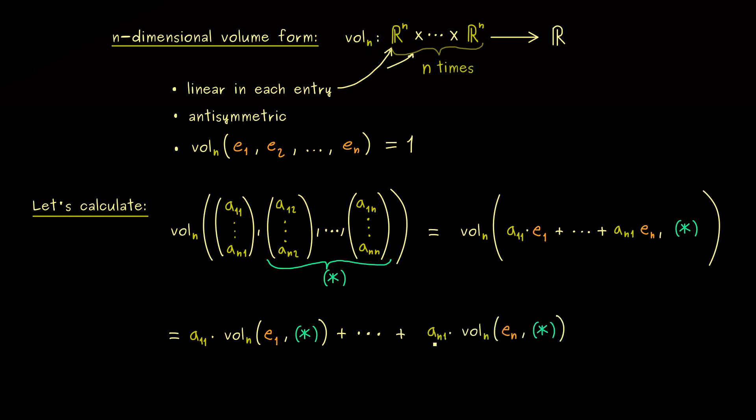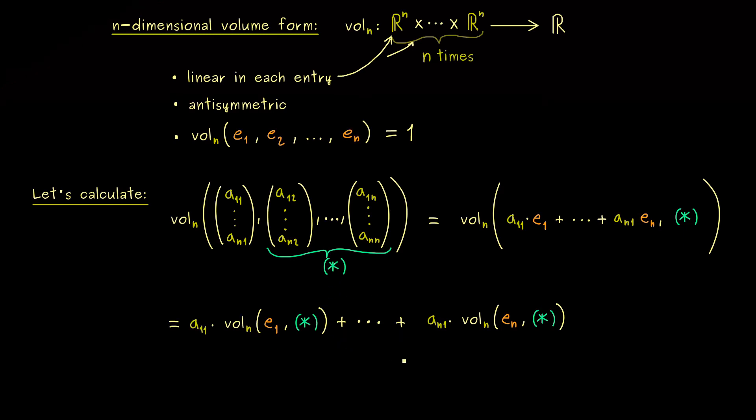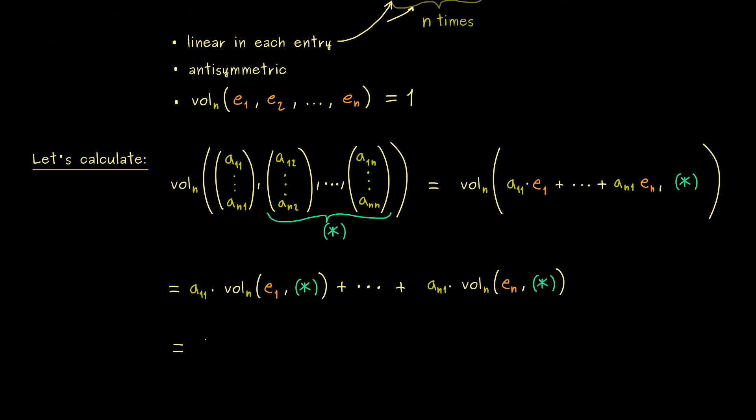And here please note, still the first index for a has to correspond to the index in e. Okay, and now I can tell you writing these dots here all the time is a little bit cumbersome, so we better use a sum notation. So what we need is a sum that goes from 1 to n.